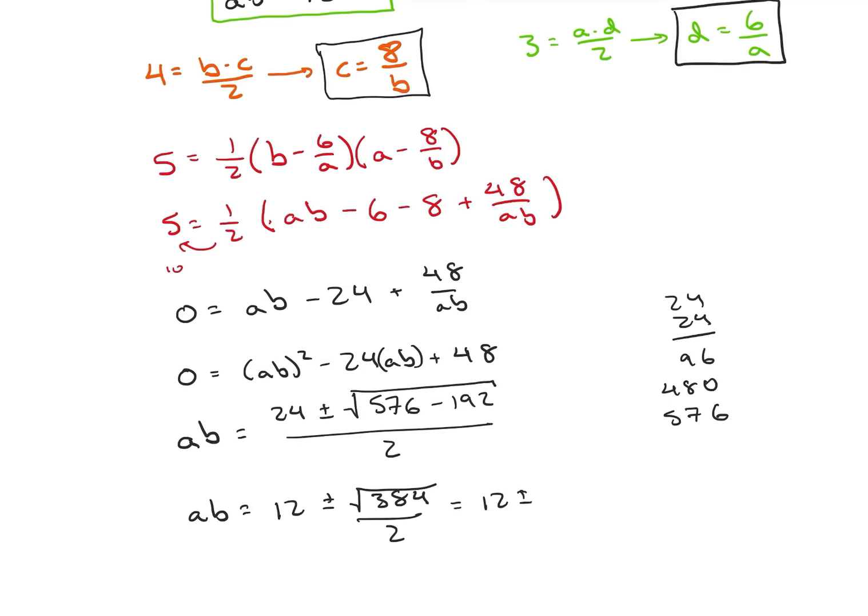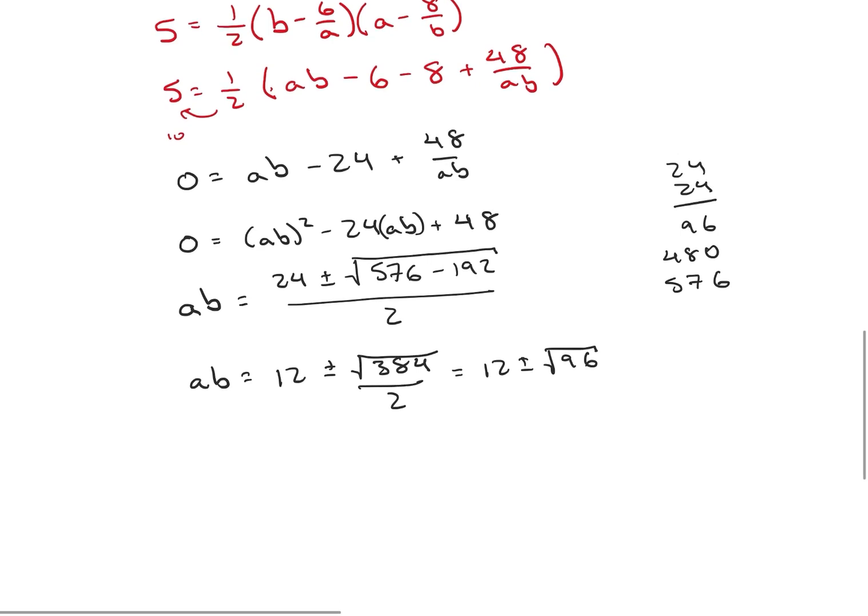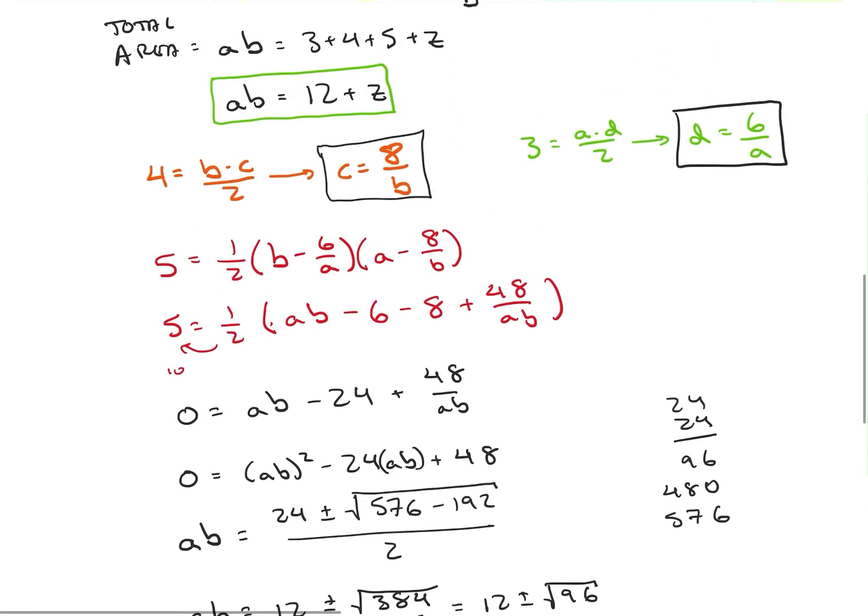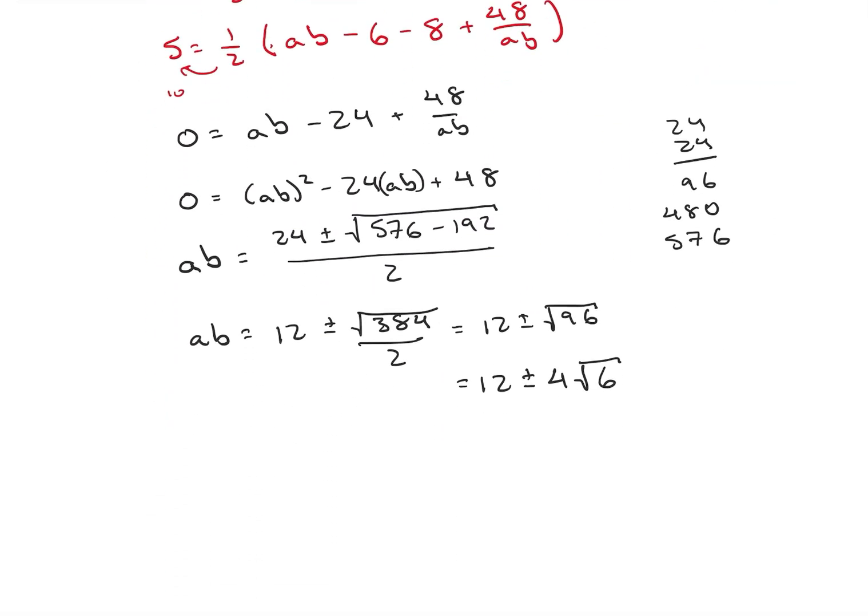384 divided by 4 is 96. So this is going to be 12 plus or minus the square root of 96. We could factor out a 16. So this is going to be 12 plus or minus 4 times the square root of 6. So we have 12 plus or minus 4 root 6. AB has to be bigger than 12, so it is going to have to be a plus. So 12 plus 4 square root of 6.